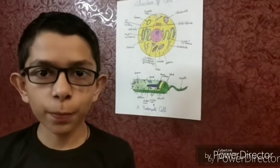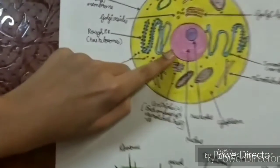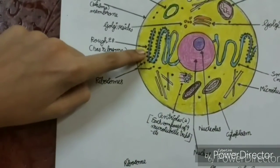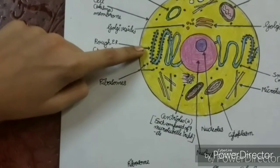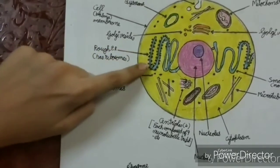The next one is the endoplasmic reticulum. As you can see here, it starts from the nuclear membrane and extends into the cytoplasm. They are mainly involved in the synthesis and folding, modification, and transport of proteins. The endoplasmic reticulum is of two types: the rough endoplasmic reticulum and the smooth endoplasmic reticulum.